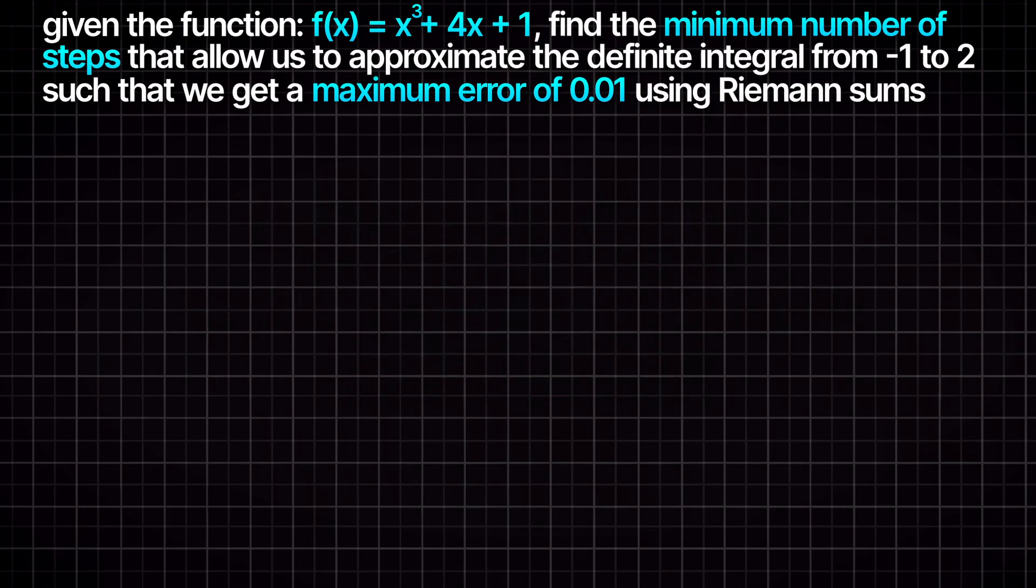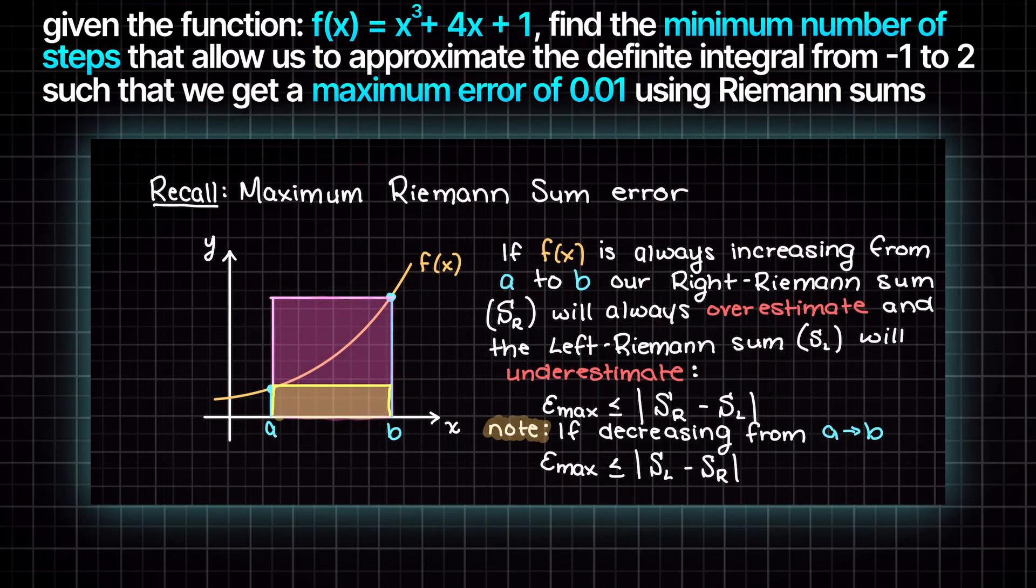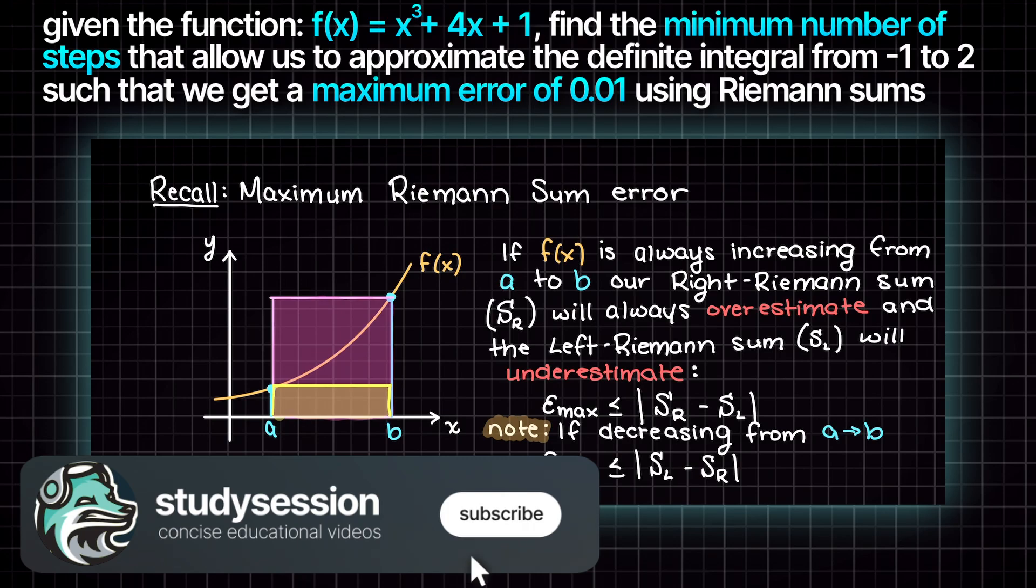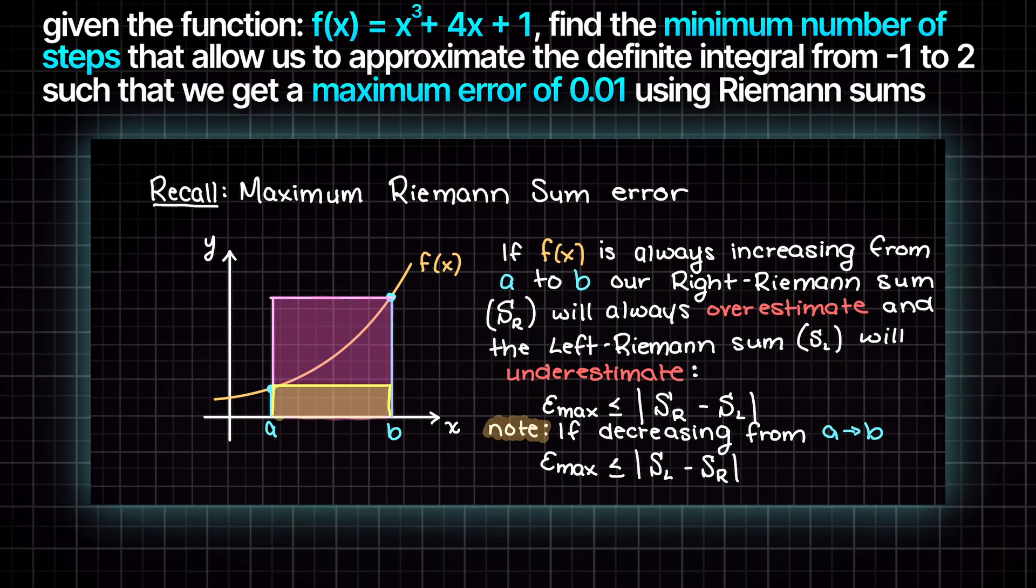In our previous video we developed the following equation for monotonically increasing functions with equal step sizes, meaning all of our subintervals will be of equal sizing and our function from our lowest integral bound to our upper integral bound is always increasing.